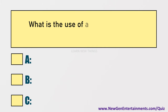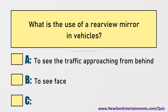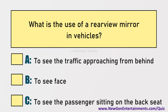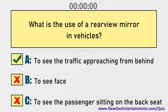What is the use of the rear view mirror in vehicles? Options are: A) To see the traffic approaching from behind, B) To see one's face, C) To see the passenger sitting on the back seat. Answer: Option A, To see the traffic approaching from behind.